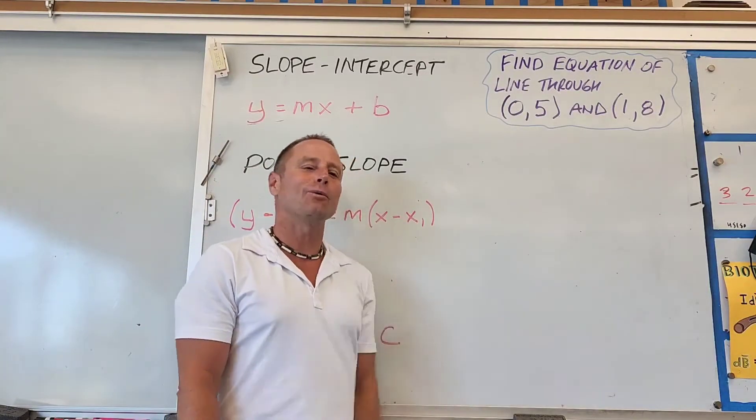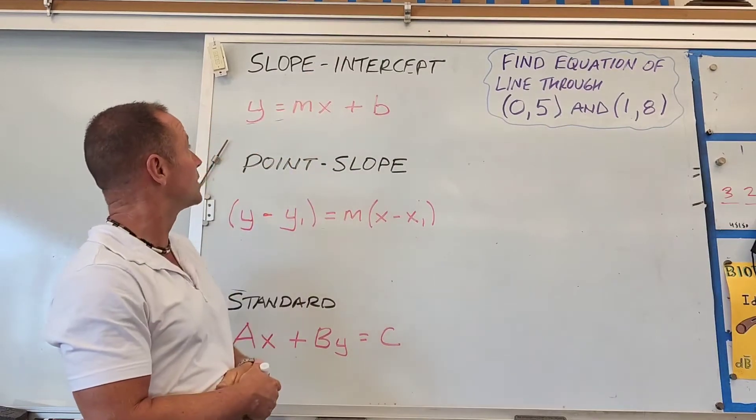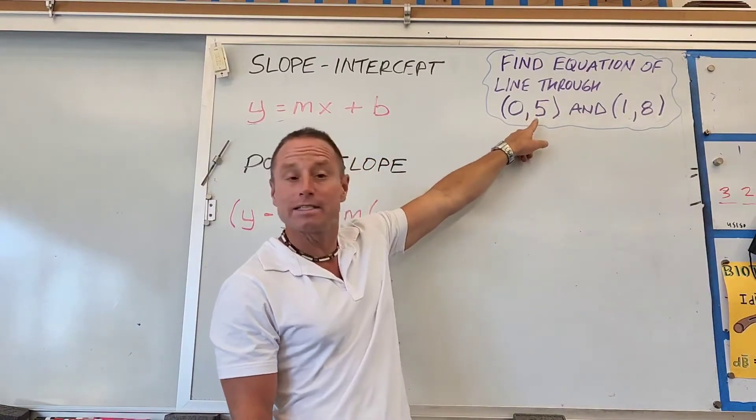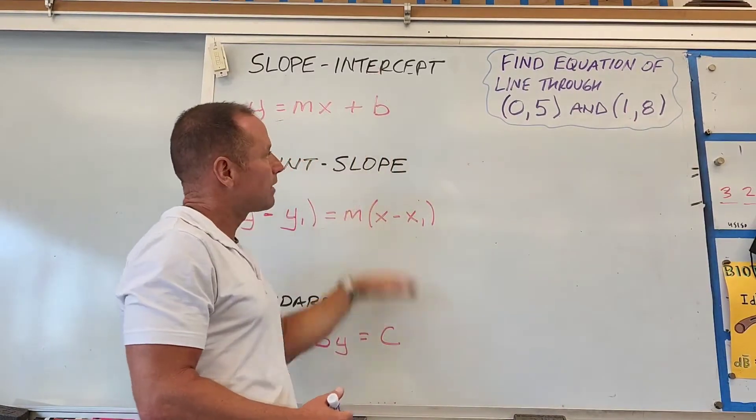We're going to look at three different ways to write the equation of a line. We'll find the line that goes through the points (0,5) and (1,8) and write that same line three different ways.